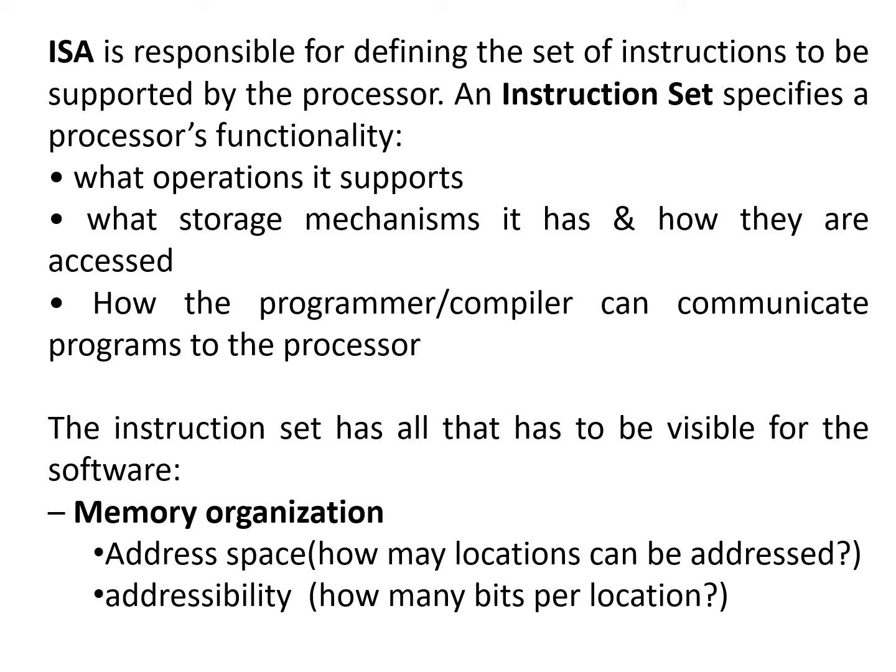The ISA is responsible for defining the set of instructions to be supported by the specific processor — it specifies the processor's functionality. Every type of processor has a particular instruction set architecture. It specifies what operations it supports, what storage mechanisms it has and how they are accessed, and how the programmer or compiler can communicate programs through the processor. The instruction set has all that has to be visible for the software.